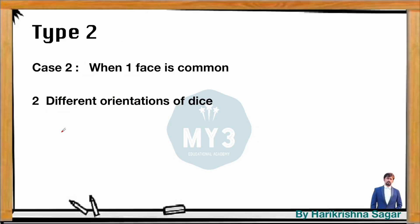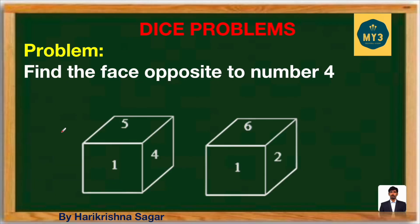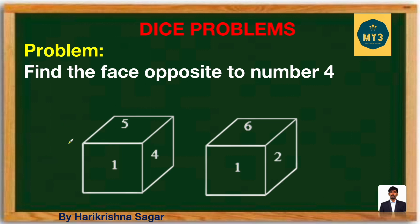Now let's look at Type 2 Case 2 — how to deal with a question when only one face is common. For example: find the face opposite to number four. Four is available in both dice shown. Rule 1 fails because four is not in all orientations. Rule 2 also fails because the minimum requirement for Rule 2 is two faces common. So apply Rule 3: when you see two dice with only one face common, use the orientation method.